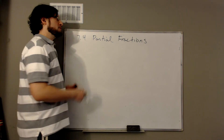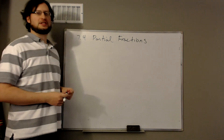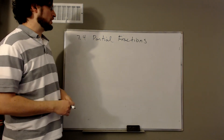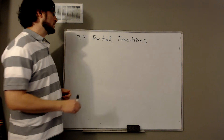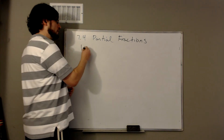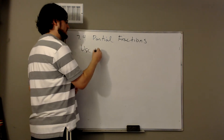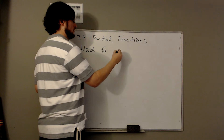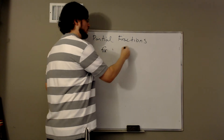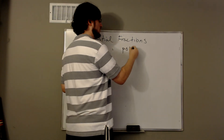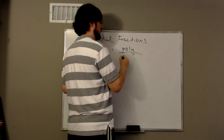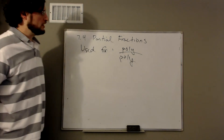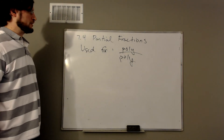This one is usually the easiest to decide you've got to use it. We can use it in a very special case: polynomial over polynomial. That's when we're going to use partial fractions.